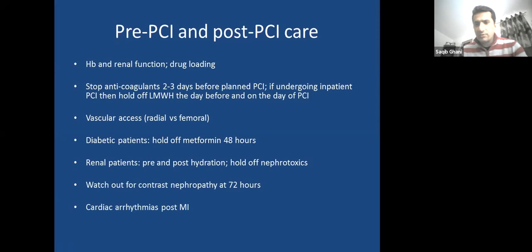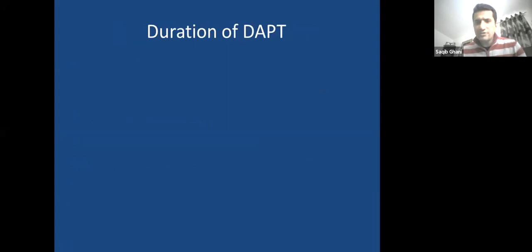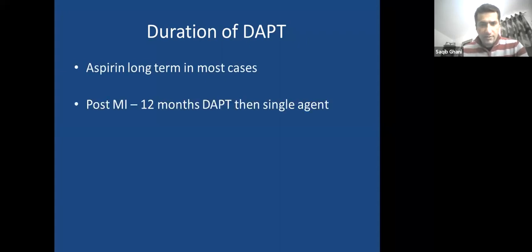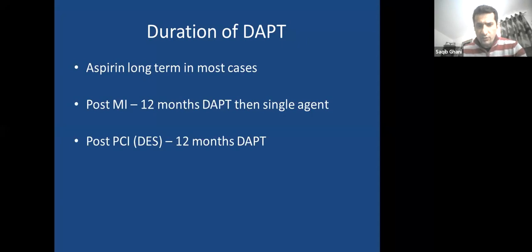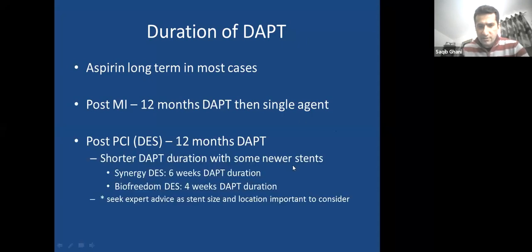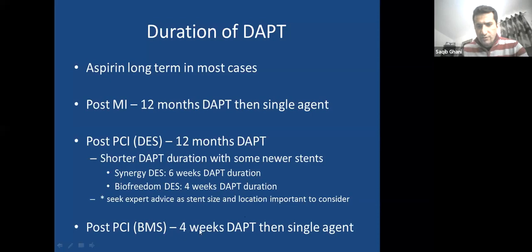How long should antiplatelet tablets be continued? Aspirin is generally given forever. Post-MI, dual antiplatelet therapy for 12 months followed by a single agent. Post-PCI with drug-eluting stent, 12 months of dual antiplatelet therapy — though certain stents like Synergy may require only 6 weeks and BioFreedom only 4 weeks. If post-MI, 12 months applies regardless of stent type. Seek expert advice as location and type of stent matters.